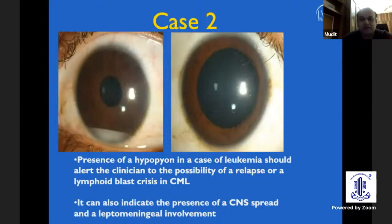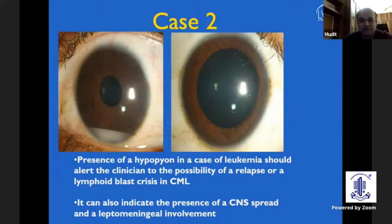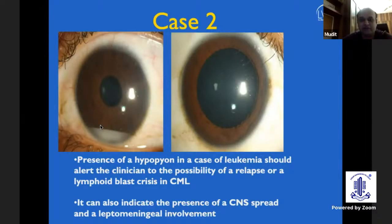When you see a patient who is already a known case of a blood dyscrasia, the presence of a hypopion becomes much more important — you might be the first person to diagnose that the patient is either going into a relapse or a blast crisis. Presence of a hypopion in a known case of blood dyscrasia should alert you to: number one, a relapse; number two, a blast crisis; and thirdly, CNS spread, due to leptomeningeal involvement from pial arteries to the ciliary arteries introducing tumor cells into the anterior chamber. Ophthalmologists can become extremely valuable in identifying these cases early enough.